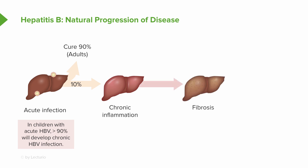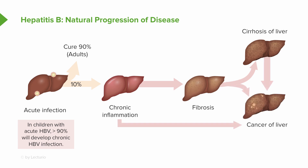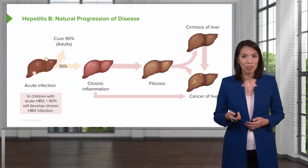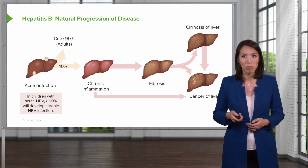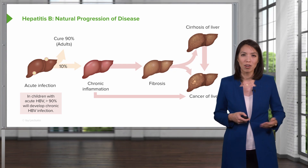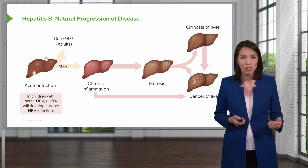In adults, chronic inflammation then leads to fibrosis, which can lead to the end stage of cirrhosis of the liver, and that may lead in turn to cancer or hepatocellular carcinoma. Hepatitis B is unique in that you do not need to develop fibrosis or cirrhosis to develop cancer — you can go straight from chronic infection or chronic inflammation to cancer.